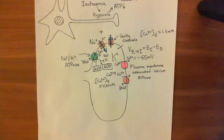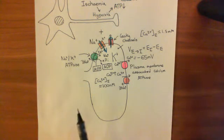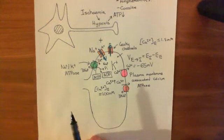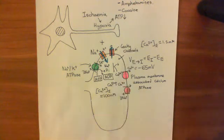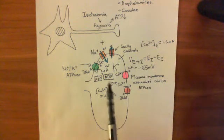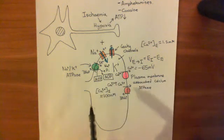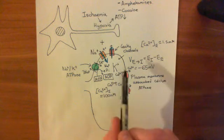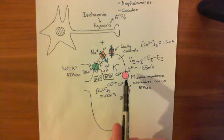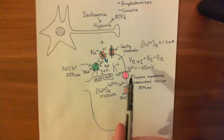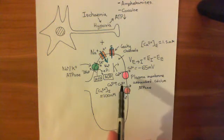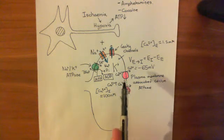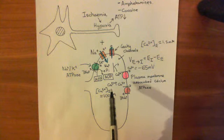Welcome to this third video on strokes and excitotoxicity. So far we've seen that if a neuron gets hypoxic because of some sort of ischemic-causing incident, such as an occlusive or hemorrhagic stroke, then ATP within that neuron is going to go down. If ATP goes down in the axon terminal, that's going to lead to the two extrusion mechanisms for calcium going out of business. These are the only two notable calcium extrusion mechanisms, so calcium is going to go up.